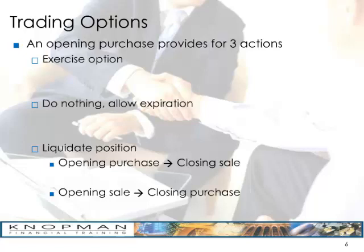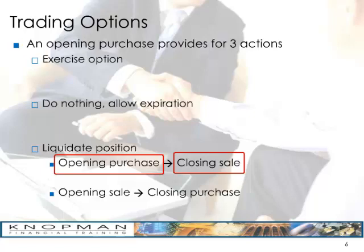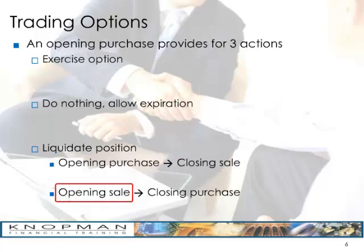There are two core fundamental concepts to understanding options. The first is understanding that an option is a security. Just like when you buy stock, if you buy an option you don't have to hold it — you can choose to sell it and trade it. If you have an opening purchase, you sell to close. If you have an opening sale, you buy to close. You're not required to either exercise or let it expire; you can always trade the option and either profit or lose.